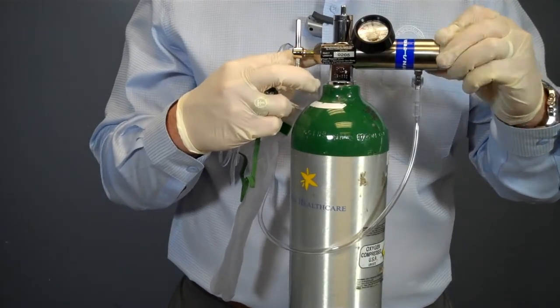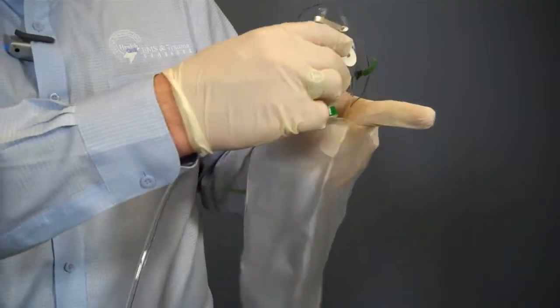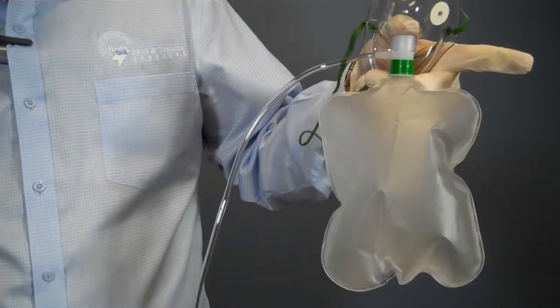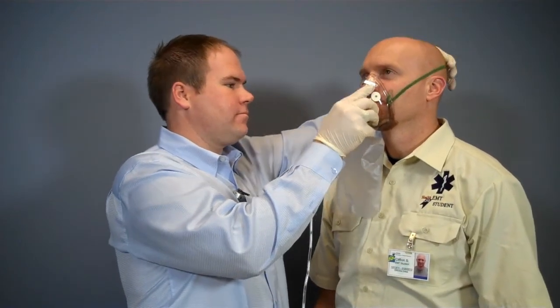I will now adjust the flow to between 10 and 15 liters per minute. Then I place my finger over the valve inside the mask to allow the reservoir to fill. I now place the mask over the patient's face and adjust the straps around their head.